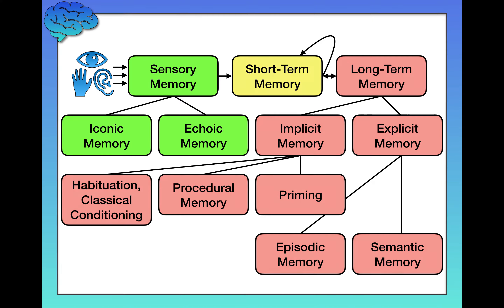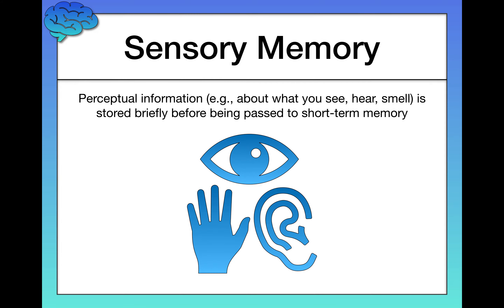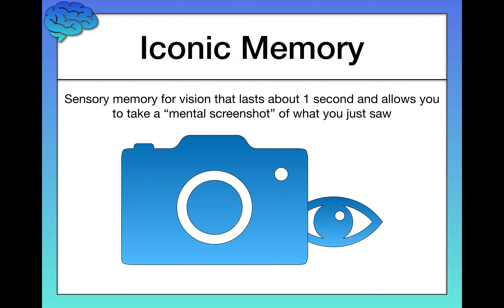Sensory memory is memory for perceptual information — information about what you can see, hear, smell, and so on from the outside world. This is the memory system in which memory is stored very briefly before being passed on to short-term memory. The best way to understand sensory memory is to go through the two subsystems within it, starting with iconic memory.